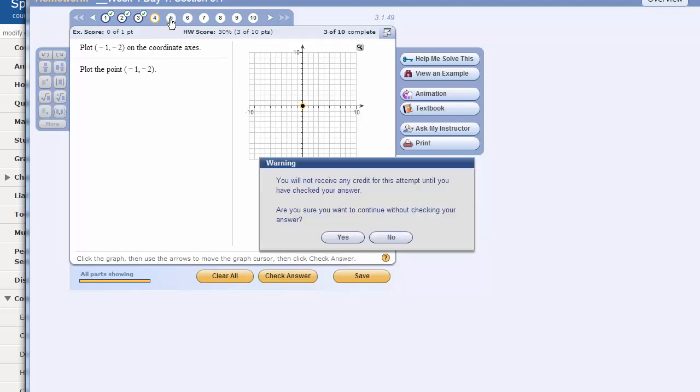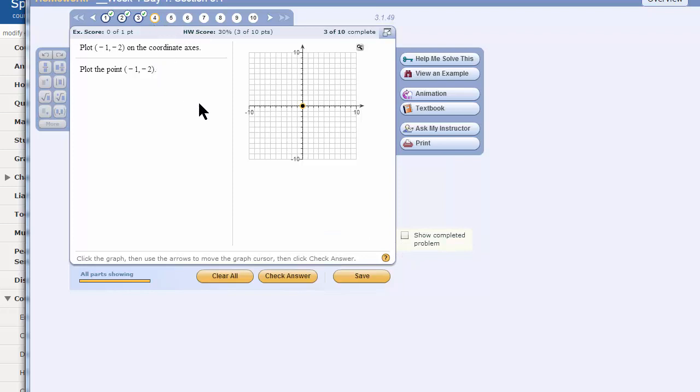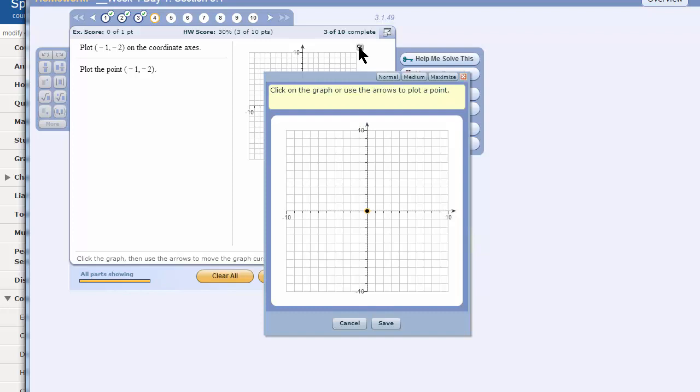Okay, let's do number 4. Now, this is negative 1 on the x-axis, negative 2 on the y-axis. On the y-axis, the negative numbers are down. On the x-axis, the negative numbers are to the left.